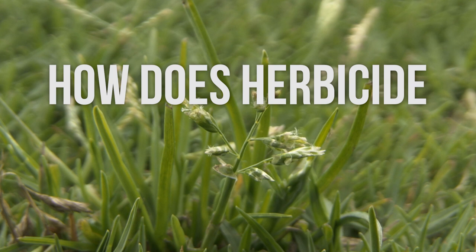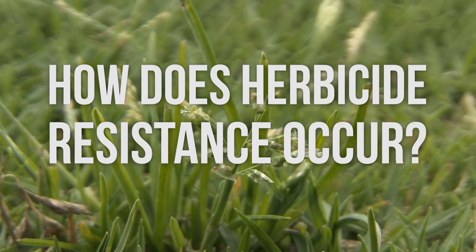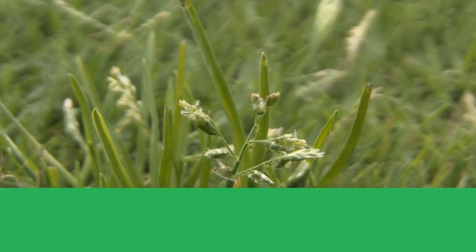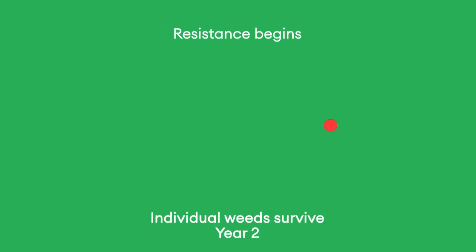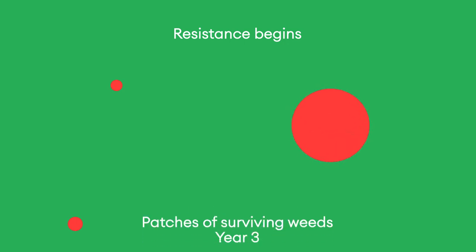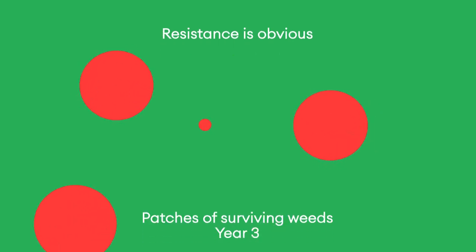How does herbicide resistance occur? Herbicide resistance naturally occurs at very low levels in the overall weed population. It is created by natural mutations allowing some weeds to survive and reproduce.